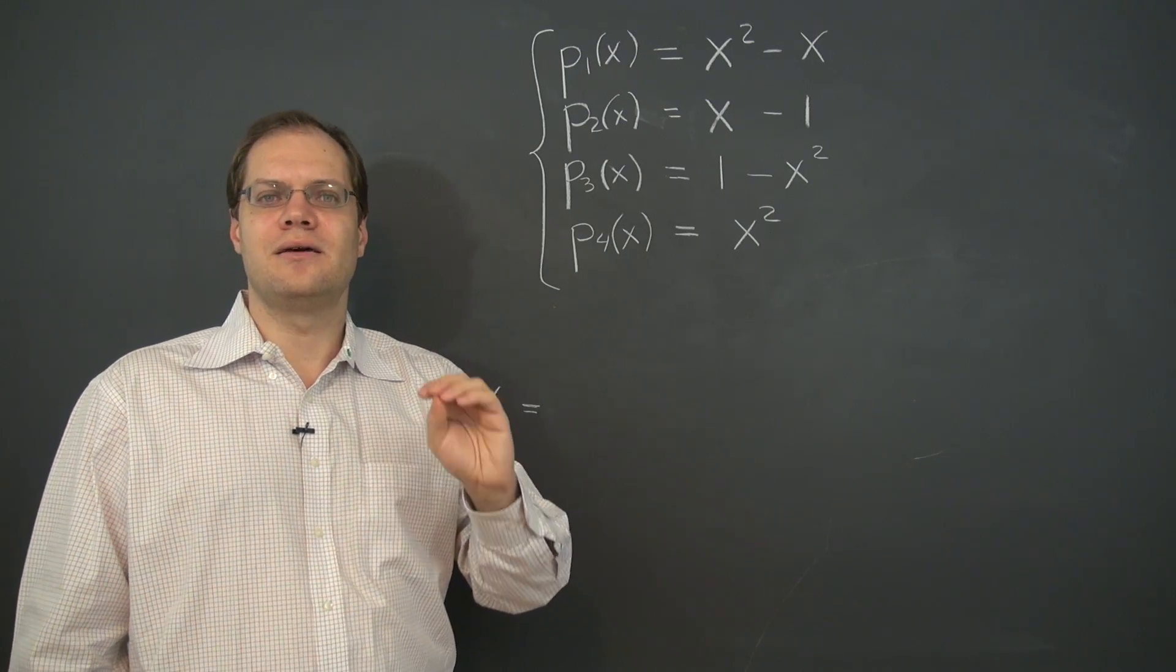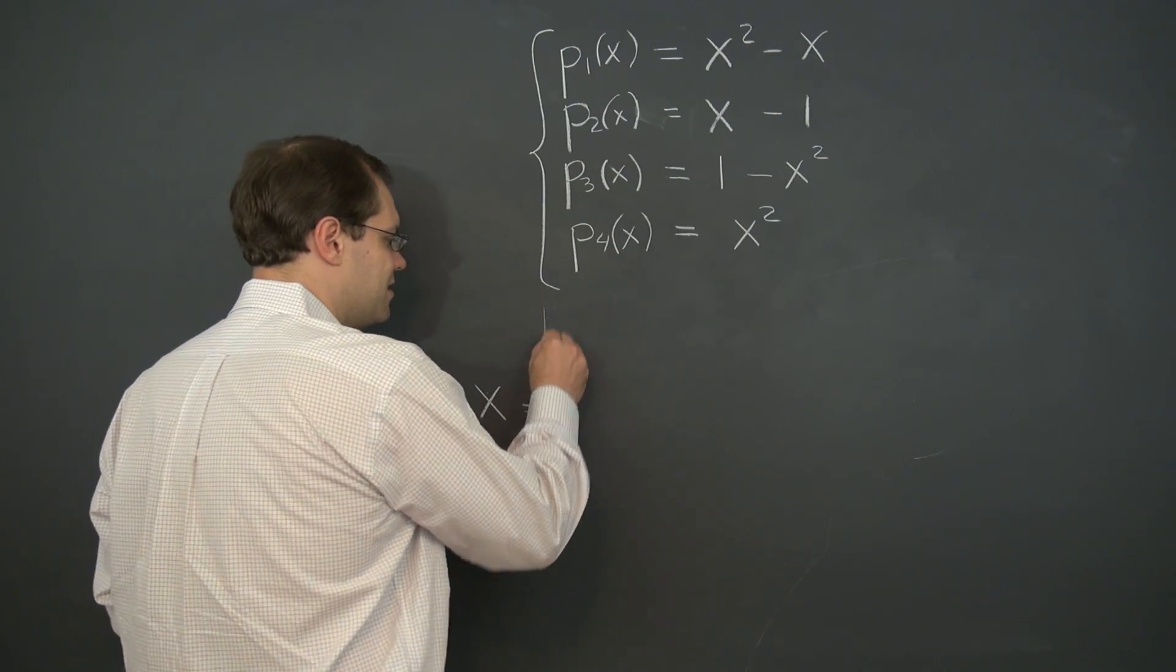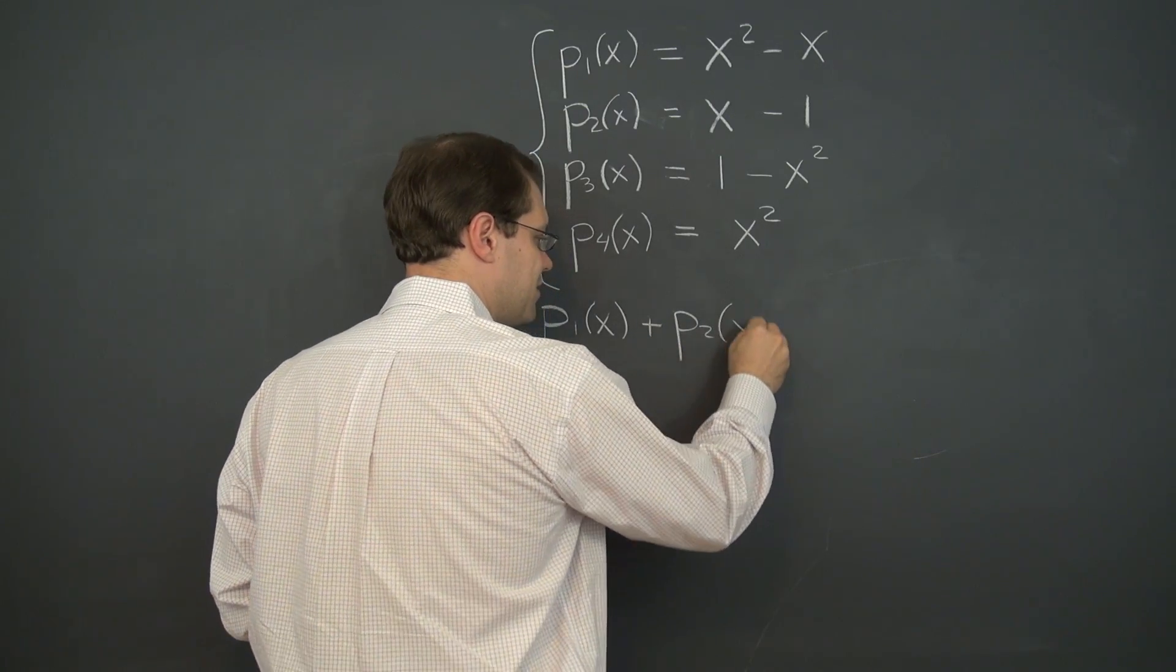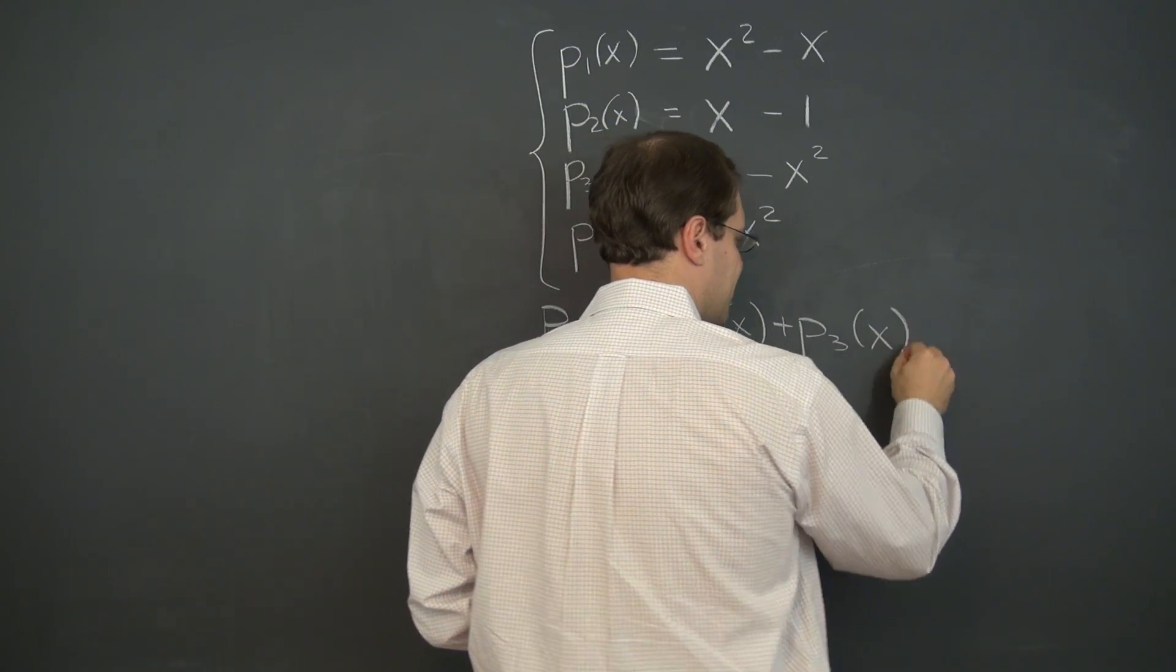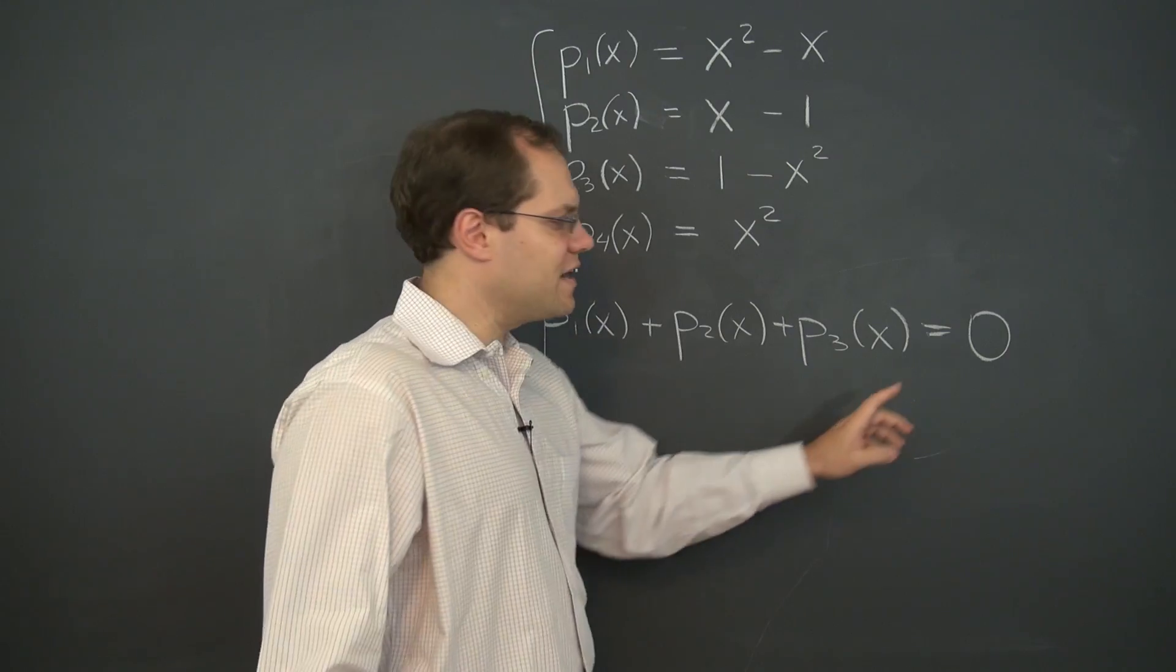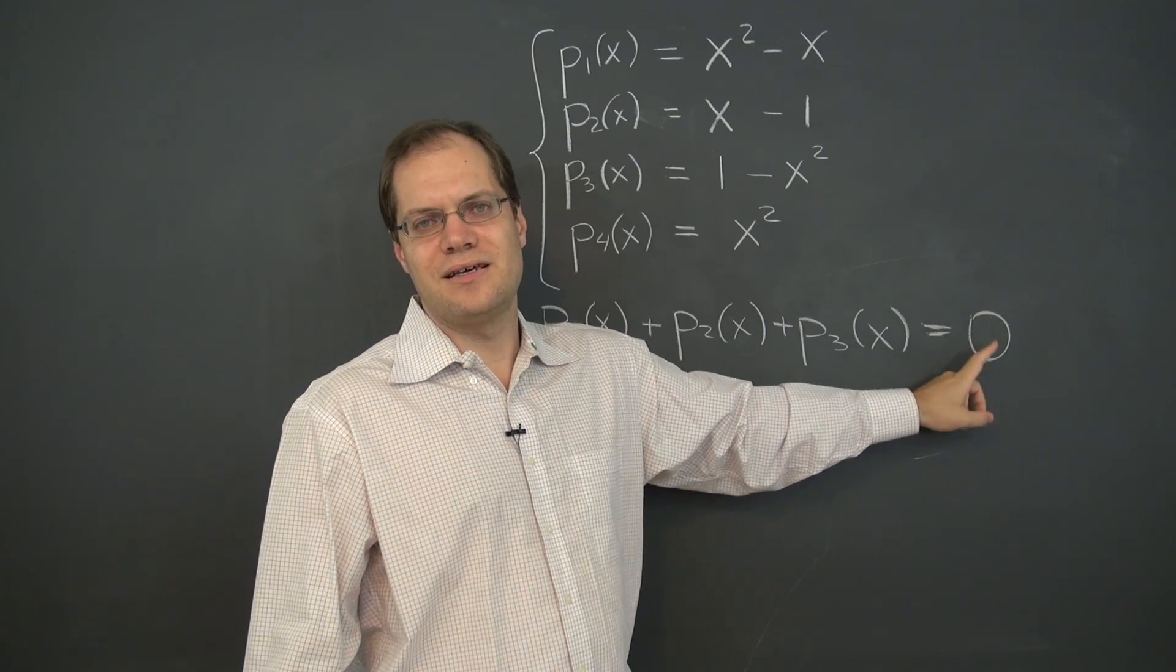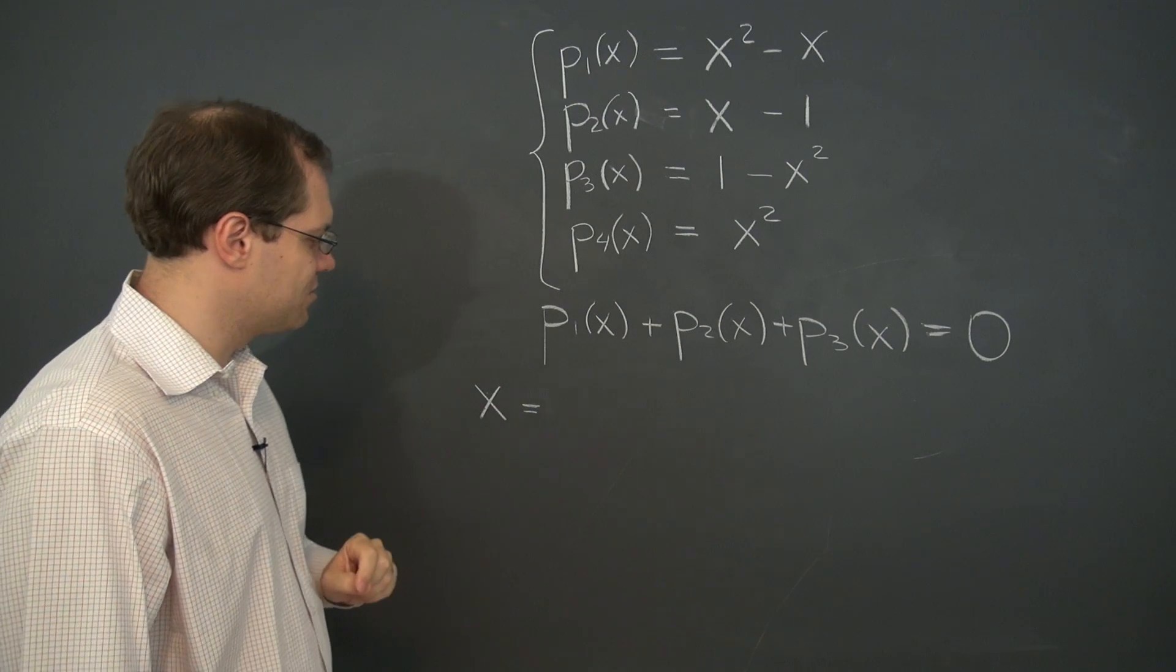So that tells us that these polynomials are linearly dependent, and the non-trivial linear combination that we're always hoping to find for this kind of exercise is this, p1 of x plus p2 of x plus p3 of x equals zero. This right here is our fancy zero, and just one note, this is not zero, the number. This is zero, the polynomial, the zero polynomial.